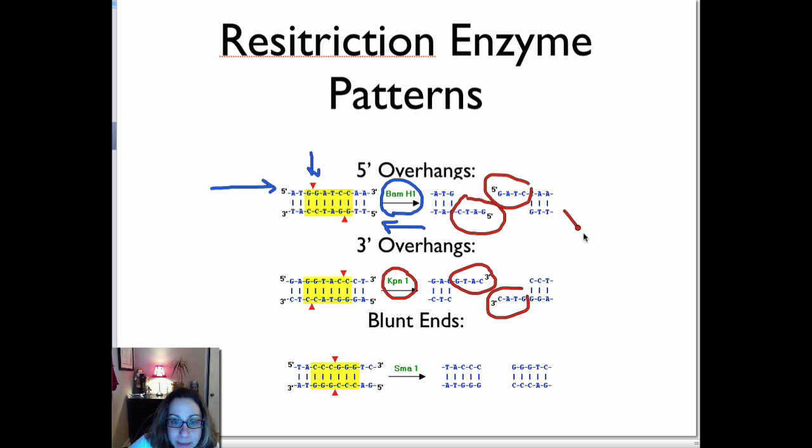And these types of restriction enzymes, whether it's a 5' overhang or a 3' overhang, are called sticky ends. So what they do is they leave these overhangs, which is called a sticky end, because you've got this excess nucleotide hanging out over here that will attach to the corresponding nucleotides.